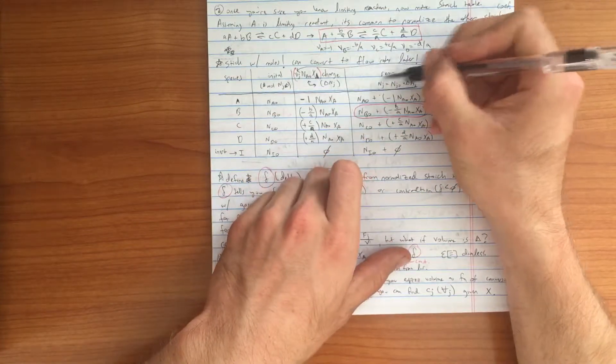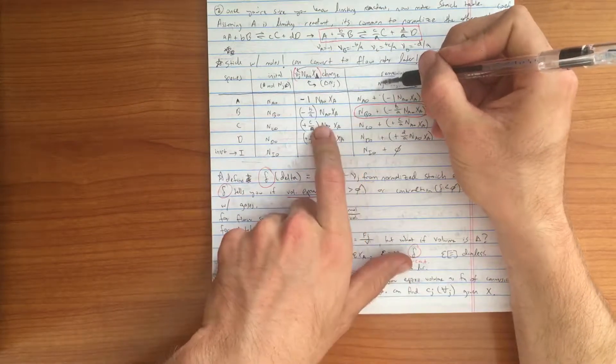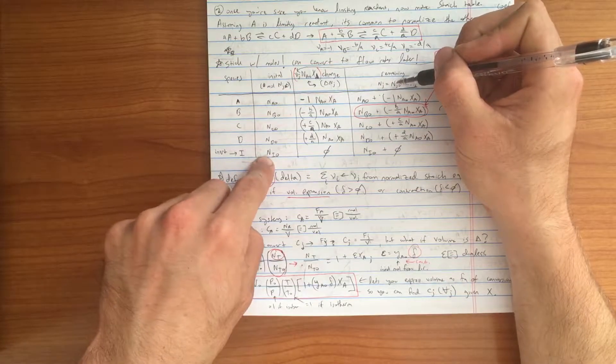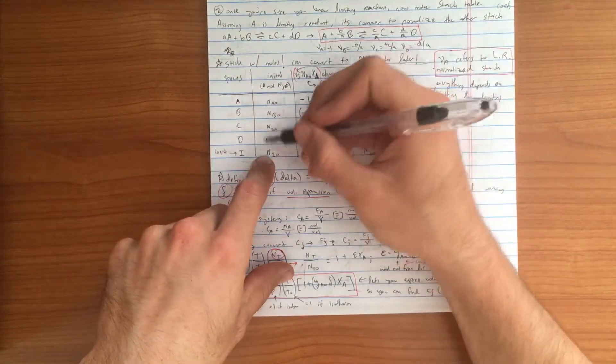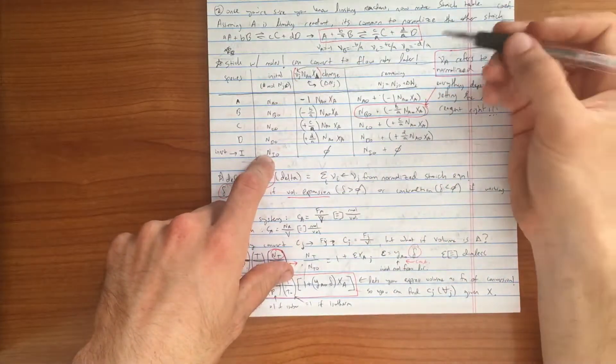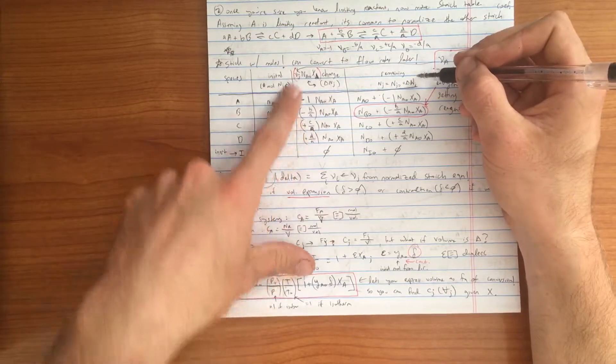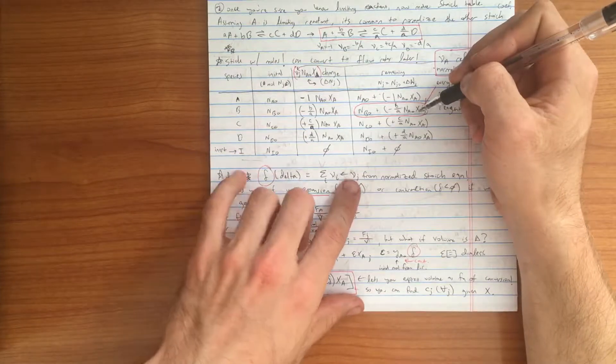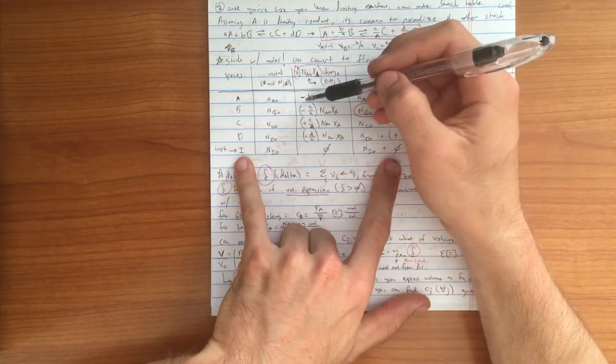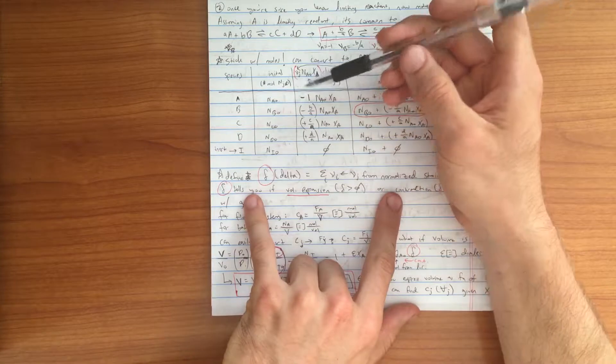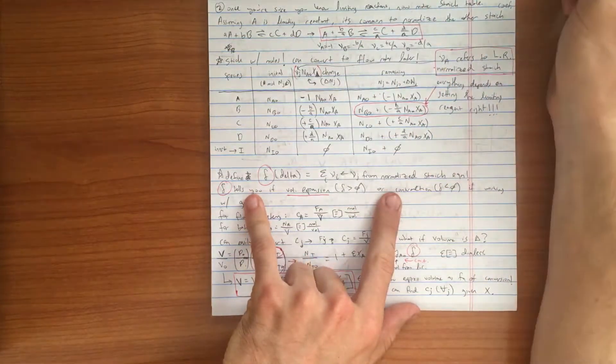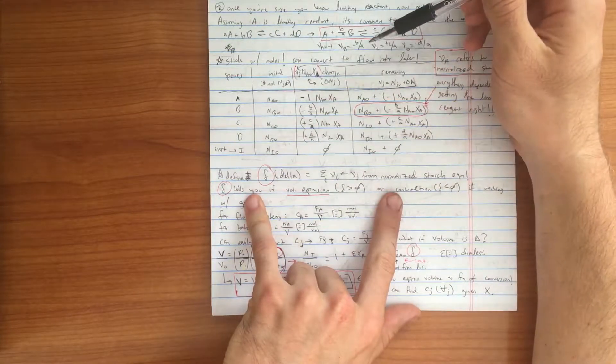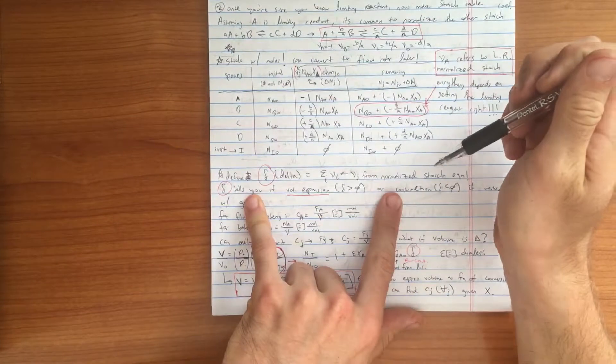Your final column is the number of remaining, which is simply equal to N sub J, which is equal to N sub J naught. So the initial number of moles you start with, and these could also equal zero, commonly they're equal to zero for your products, plus delta N sub J, which was this middle column here. So it's just a matter of adding them up. This is the starting point from which we can begin to derive the concentration of a certain species, or a molar flow rate of a certain species, at a particular conversion.